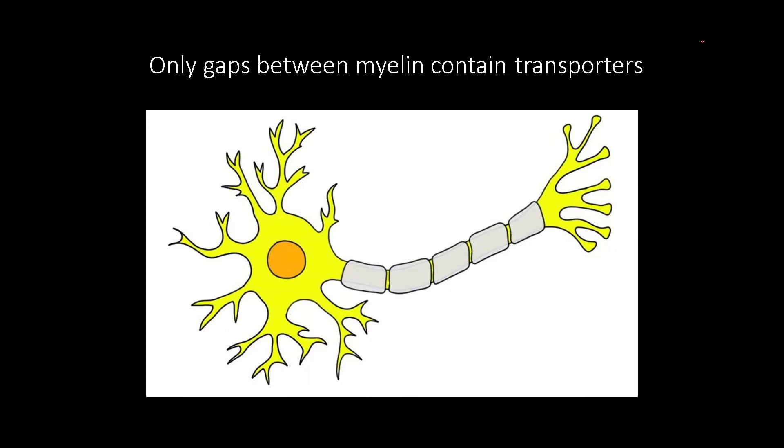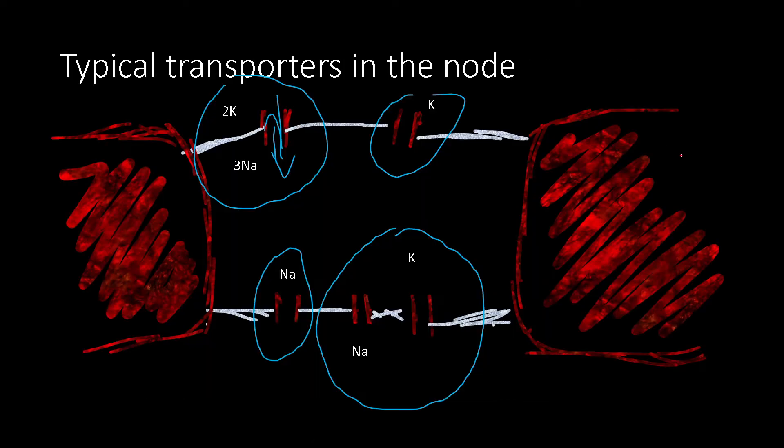It's important to note that only the gaps between the myelin sheets at the nodes of Ranvier, these right here, contain transporters. Otherwise it is impossible for ions to travel into and out of the axon. And here are some typical transporters in the nodes. The most relevant one for our discussion is going to be the voltage-gated sodium channel right here.